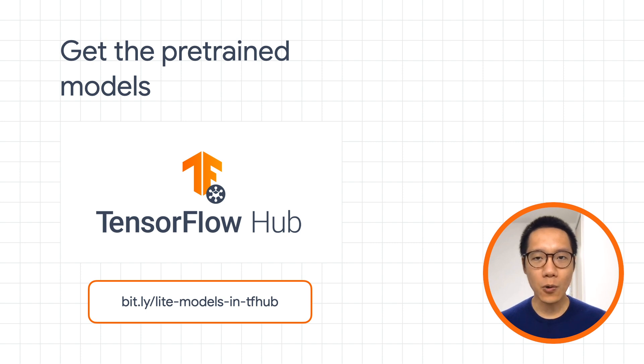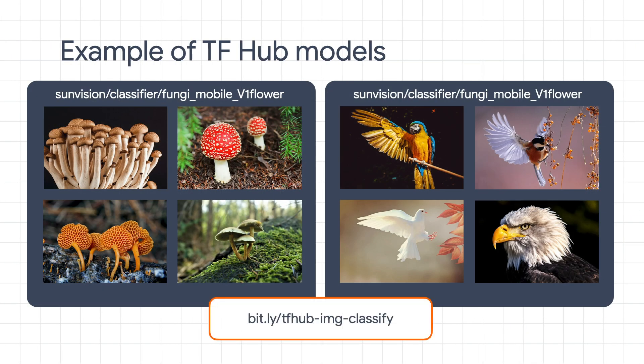There you can find pre-trained models not only from Google, but also from developers around the world. For example, there are image classification models to recognize about 1,000 types of birds, or over 2,000 types of plants, or another model to recognize more than 1,000 types of insects. There are many more models in other domains as well, such as text classification, sounds classification, and speech recognition. Please check them out on TensorFlow Hub.